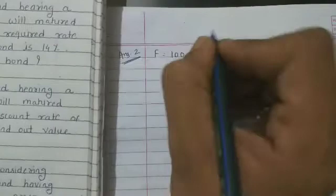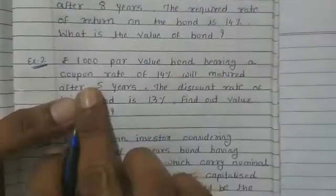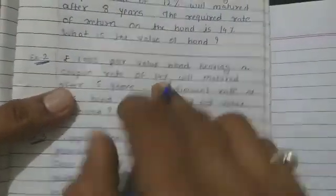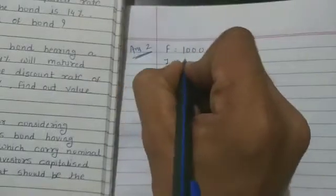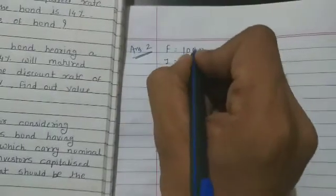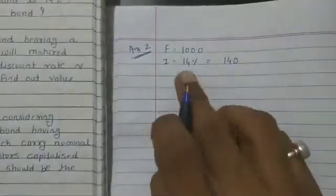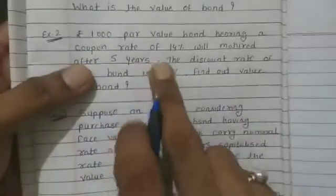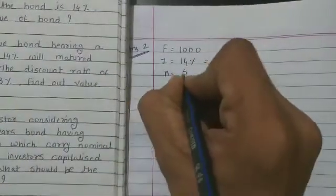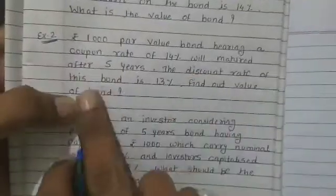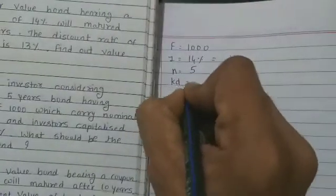First, rupees 1000 par value bond, so face value F = 1000. Bearing a coupon rate of 14 percent, so i = 14 percent. 14 percent of 1000 gives us i = 140. Remember, interest is calculated on the face value. Will mature after five years, so n = 5.